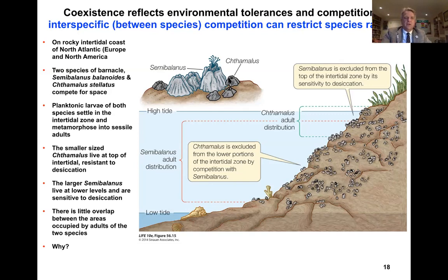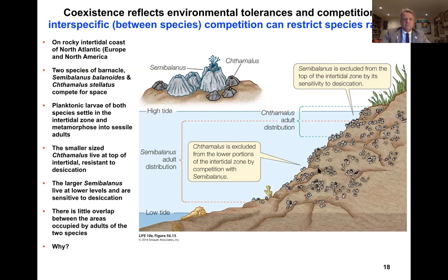The smaller Chthamalus lives at the top of the intertidal and is resistant to desiccation. The larger Semibalanus lives at the bottom part of the intertidal and is sensitive to desiccation. There is little overlap between the areas occupied by adults of the two species — and that was the setup for the experiment.